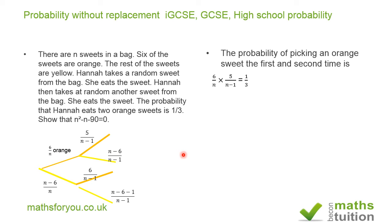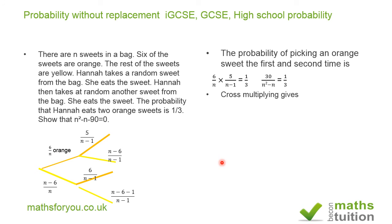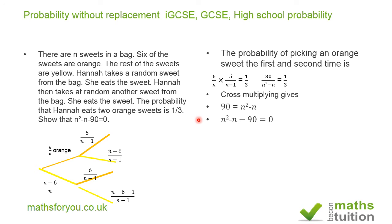That equals one third. Multiplying six by five gives 30, and multiplying n by n minus one gives n squared minus n, so we have 30 over n squared minus n equals one third. Cross-multiplying gives us n squared minus n minus 90 equals zero, which is exactly what we needed to show.